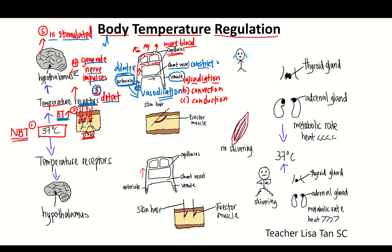Nerve impulses from the hypothalamus are sent to the skin. This causes vessel dilation of arteriole in the skin — the arteriole dilates, and the shunt vessel constricts. This causes more blood to flow to the blood capillaries near the skin surface, so more heat can be lost. This cools down your body.